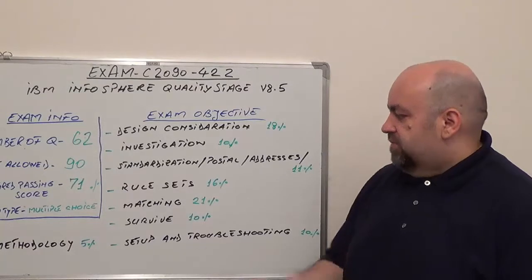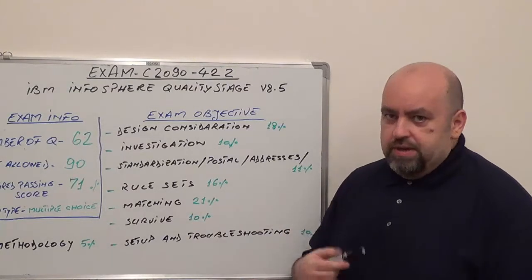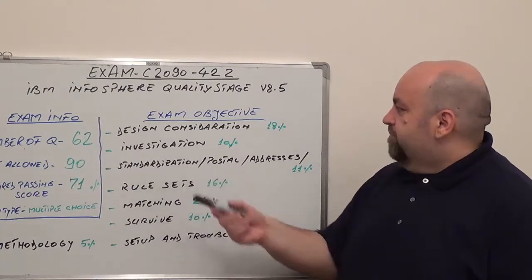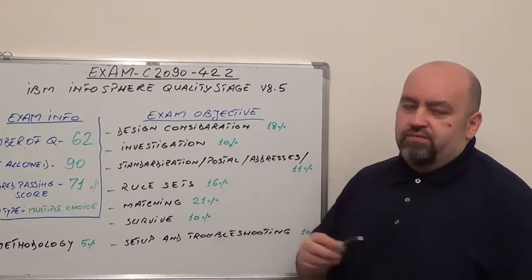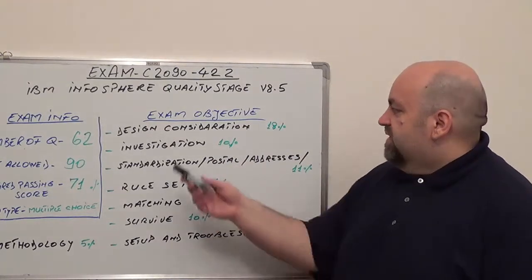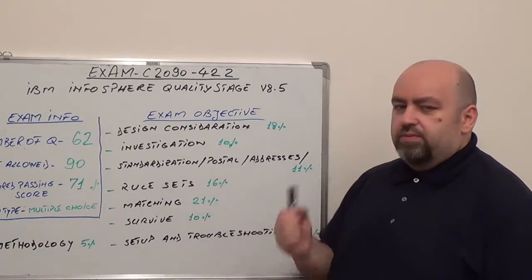First one is methodology, 5% from total of questions. Second one is design consideration, 18% from total of questions. Third one is investigation, 10% from total of questions.